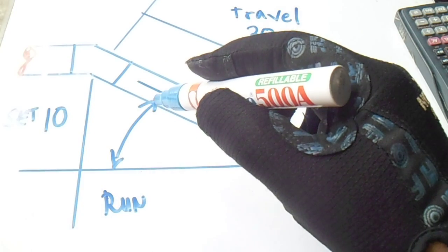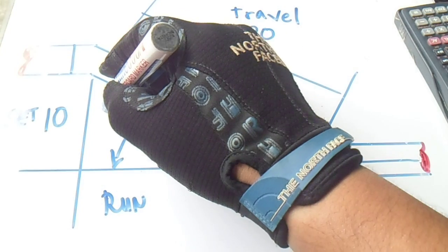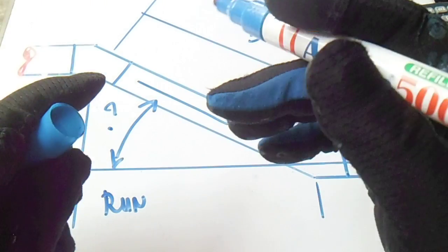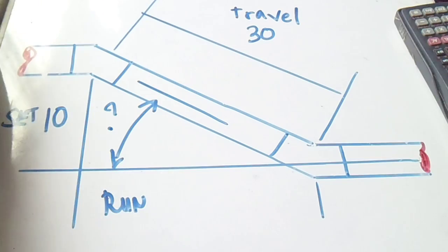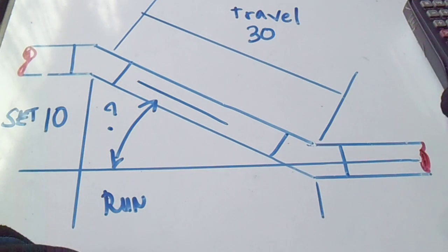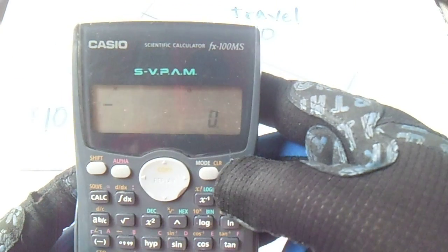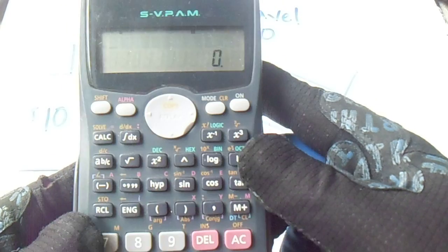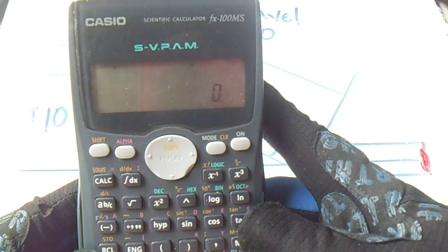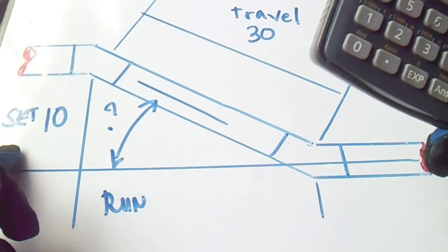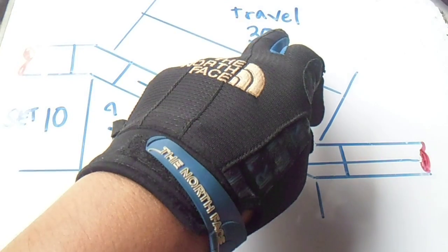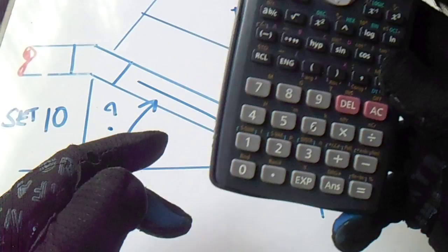What is the degrees of this and how to compute it? I will show you how using this calculator. We will compute it. So the formula for that is just set divided by travel equals sine.